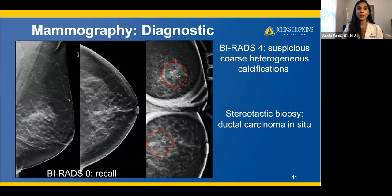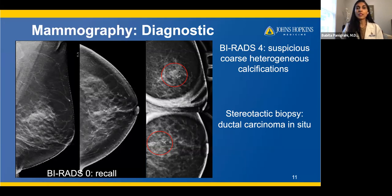This is an example of a diagnostic mammogram. On the left, you see CC and MLO views from a patient's screening mammogram where new calcifications were found — this was called a BIRADS-0. BIRADS is the Breast Imaging Reporting and Data System used by the American College of Radiology. BIRADS-0 means we need additional imaging. On the right, two specialized magnification views were obtained, which are specialized to see calcifications. These were considered suspicious — coarse heterogeneous calcifications — and were biopsied as ductal carcinoma in situ.